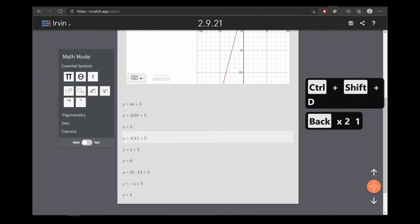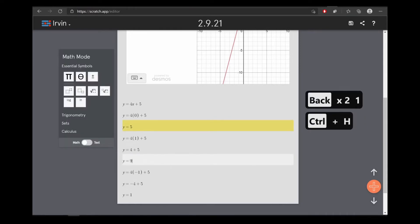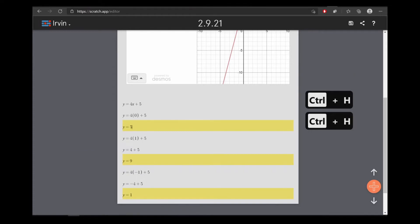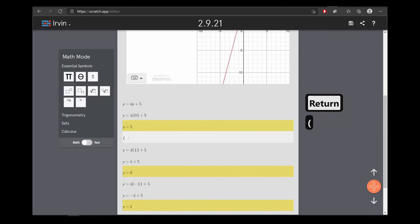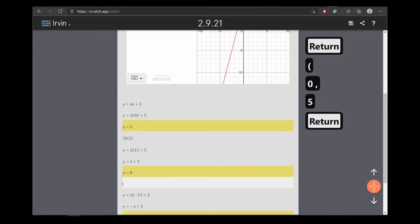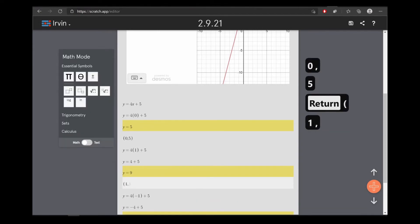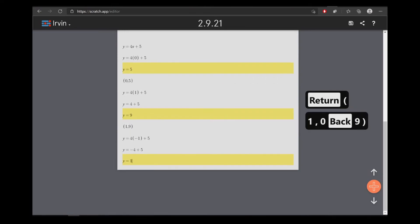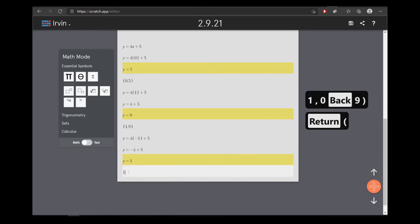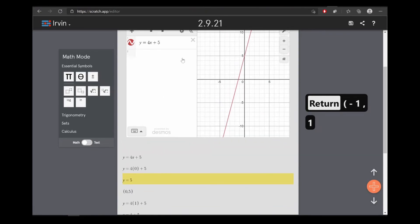And we can highlight all of these points. Now, we know it's 0, 5. For this one, it's 1, 9. And for the last one, negative 1, 1. And let's compare over here.